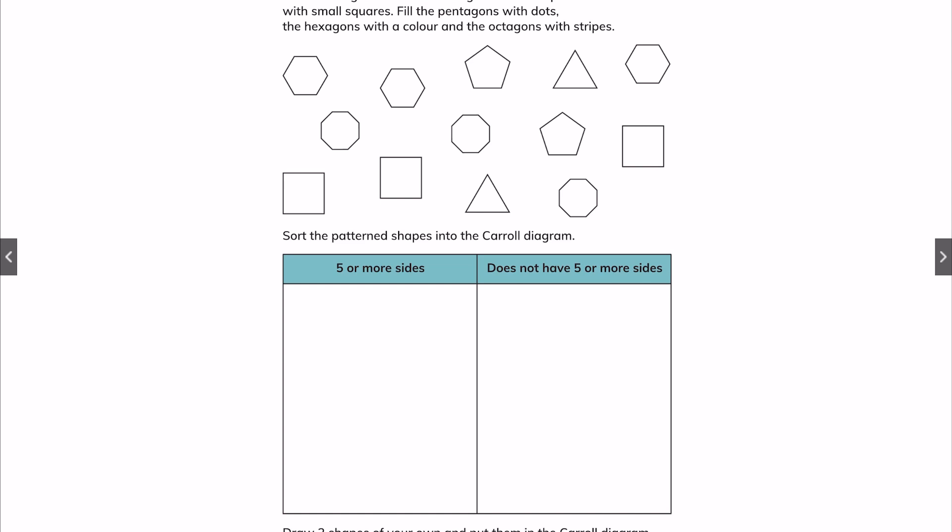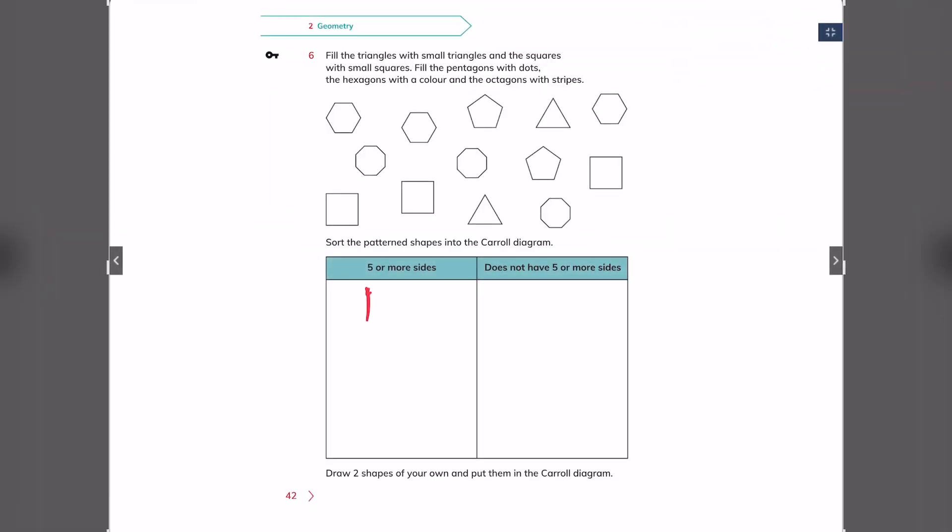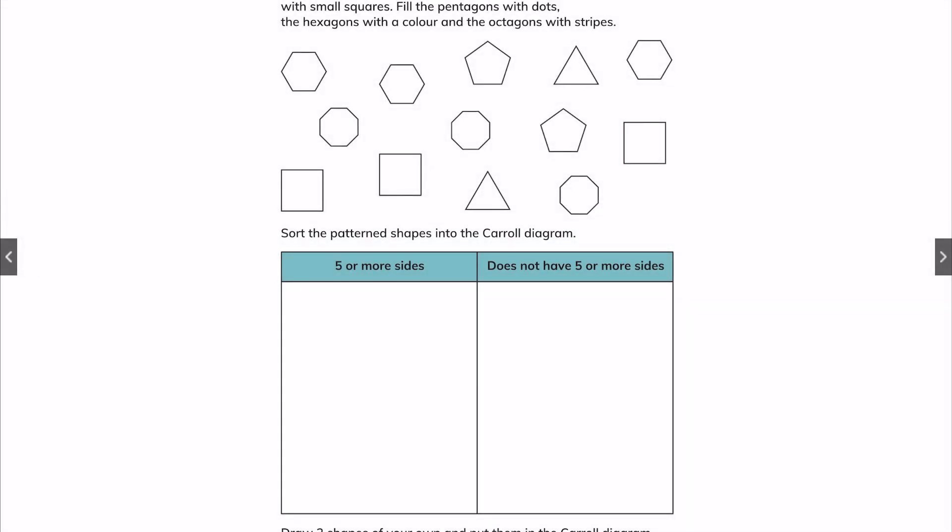Which one of these have five or more sides? You write their names here. For example, pentagon here. But those who do not have five or more sides, who have less than five sides, for example a square, you write them like this in here. Do this for the triangle, square, pentagon, hexagon, and octagon.